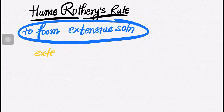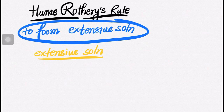If you are considering any solution to be an extensive solution according to the Hume-Rothery rule, then the atomic percent solubility should be 10 atomic percent solubility — basically, 10 atomic percent solubility should be there.